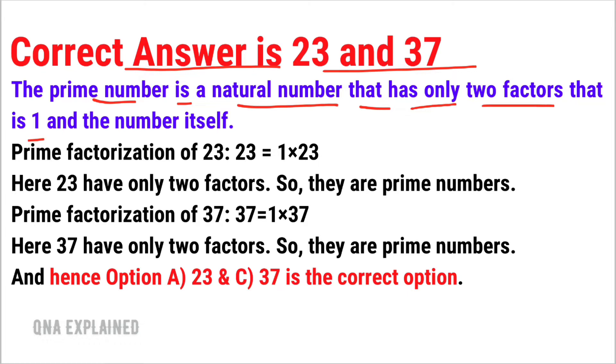1 and the number itself. Prime factorization of 23: 23 = 1×23. Here 23 has only